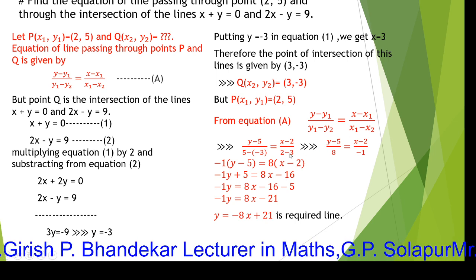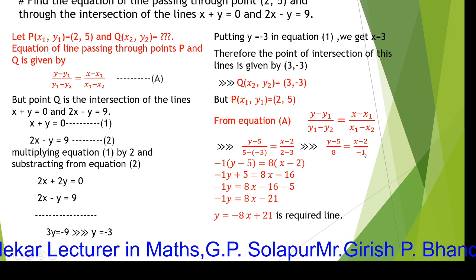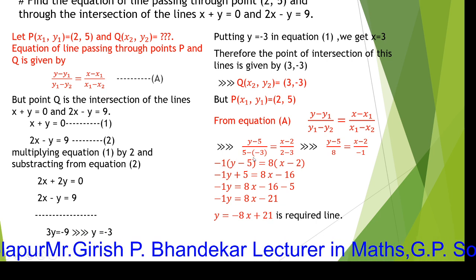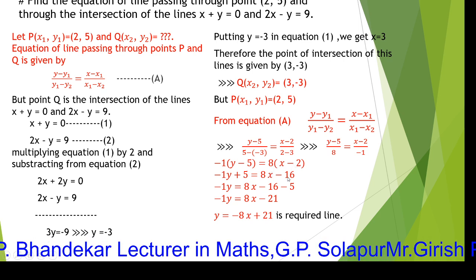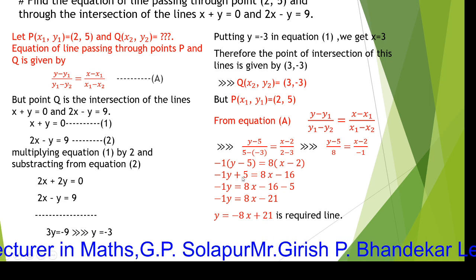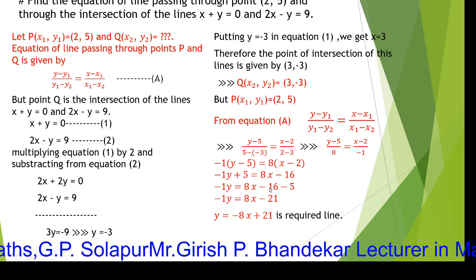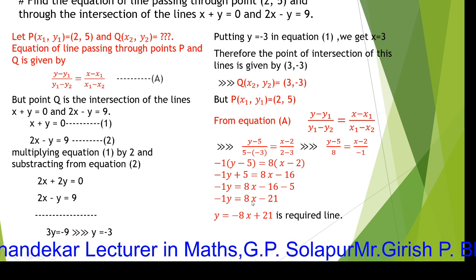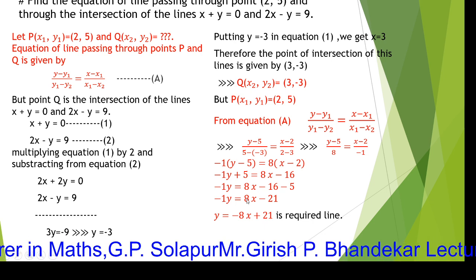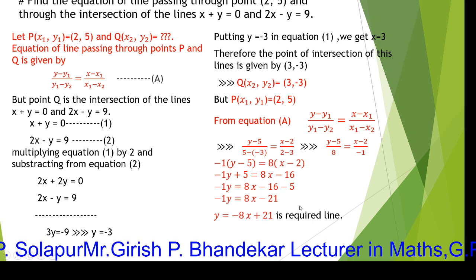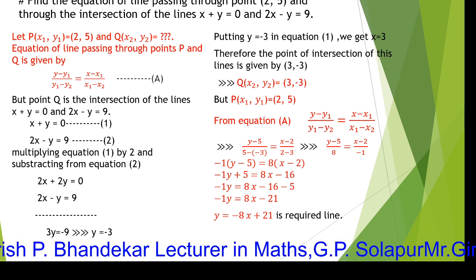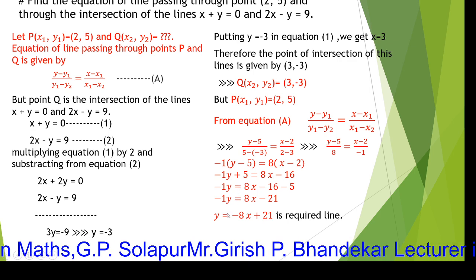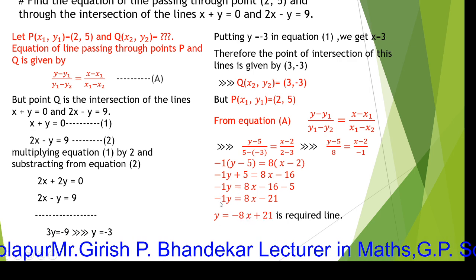Now we find the equation of the straight line passing through the two points (2, 5) and (3, minus 3) using the two-point form. After cross multiplication and simplification, the required equation of the straight line is y equals minus 8x plus 21.